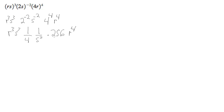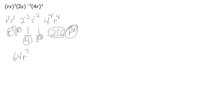So combining our coefficients first: 256 divided by 4 is 64. Then combining our r's, we get r raised to the 7th. And then s is 3 minus 2, which is just s. There we go.